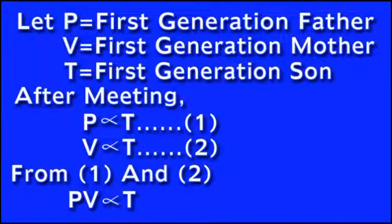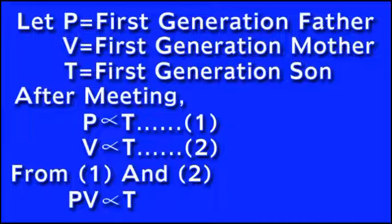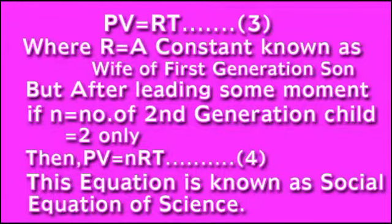Let P equal to first generation father, V equal to first generation mother, and T equal to first generation son. After meeting, P is proportional to T, and V is proportional to T. From the first and second relations, PV is proportional to T squared, which implies PV equal to RT, where R is a constant known as the wife of the first generation son.